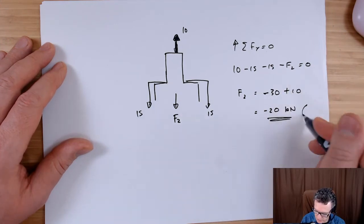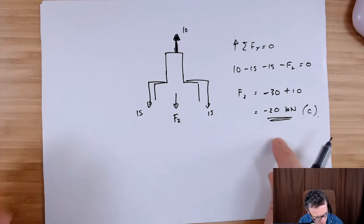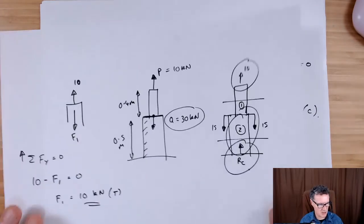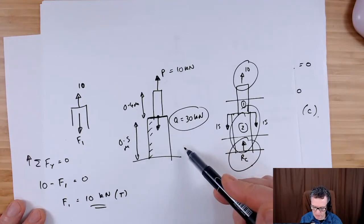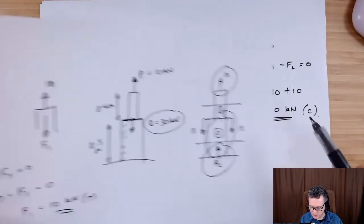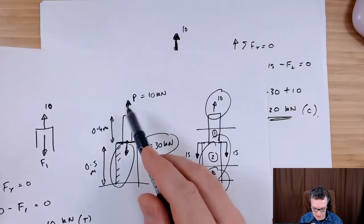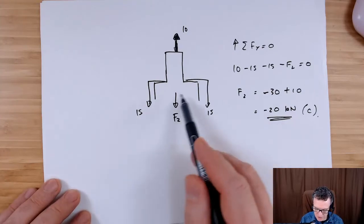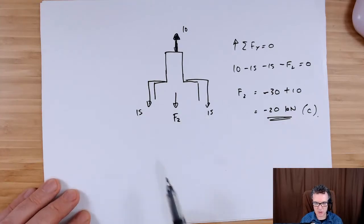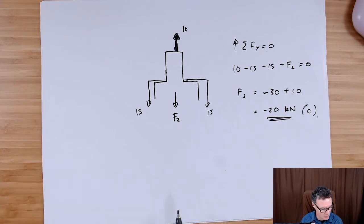So that tells me that section is in compression. You'd first guess looking at the problem that it's going to be pushing down by about 30, but in actual fact in this particular section — because we've got this upward force in there — it's going to be pushing down by only 20. So it's in compression at minus 20 kilonewtons.